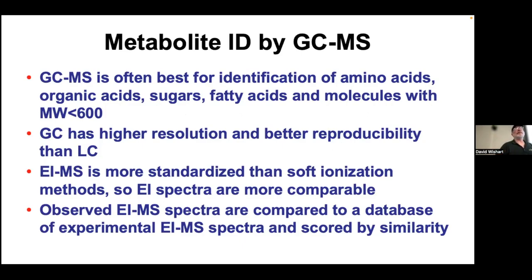GC-MS is most commonly applied to amino acids, organic acids, sugars, fatty acids, and lower molecular weight compounds. Gas chromatography has very high resolution and is more reproducible than LC, which is why it's generally more popular and cheaper than LC-MS. EI has very standardized ionization—always exactly 70 electron volts—whereas with ESI it's all over the place. That means comparison between EI spectra and the library is really good, whereas LC-MS spectra are all quite different even for the same compound. EIMS and GC-MS are highly reproducible and very standardized, which is great for translation and applications.